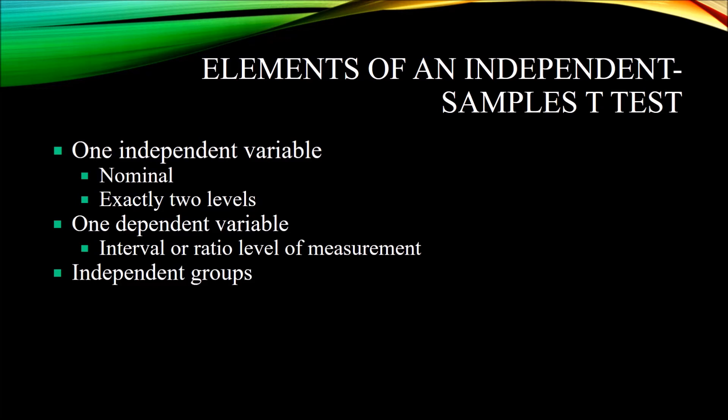Also with an independent samples t-test, the groups need to be independent — unrelated groups. A participant cannot belong to both levels of the independent variable; they have to be grouped in one level or the other. So to summarize: for an independent samples t-test, we have one dichotomous independent variable, one dependent variable, and the groups are independent.